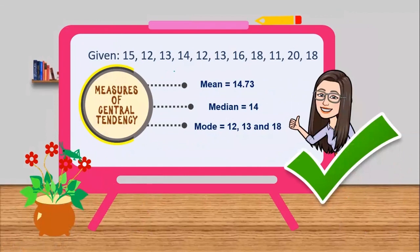As a summary, in the given set of data, we have these measures of central tendency. Mean equals 14.73, median equals 14, and mode equals 12, 13, and 18.